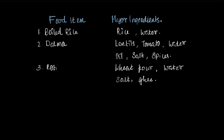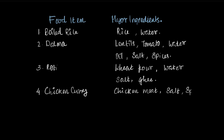The next food item is chicken curry. What are the major ingredients of chicken curry? Chicken meat of course, then salt, then spices — spices that we obtain from plants — then oil, maybe a variety of oils as per preference, and water for sure. These are different homemade food items and we saw what all goes into their making.